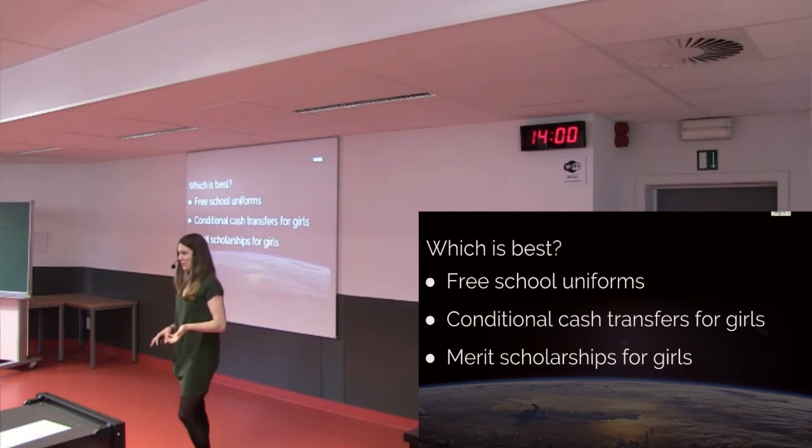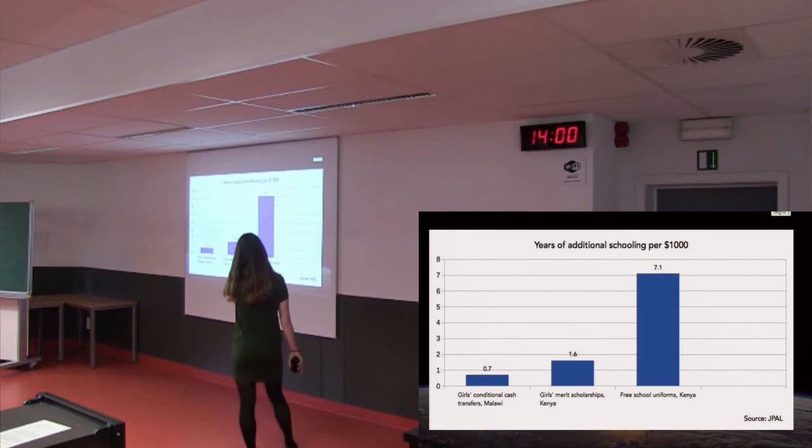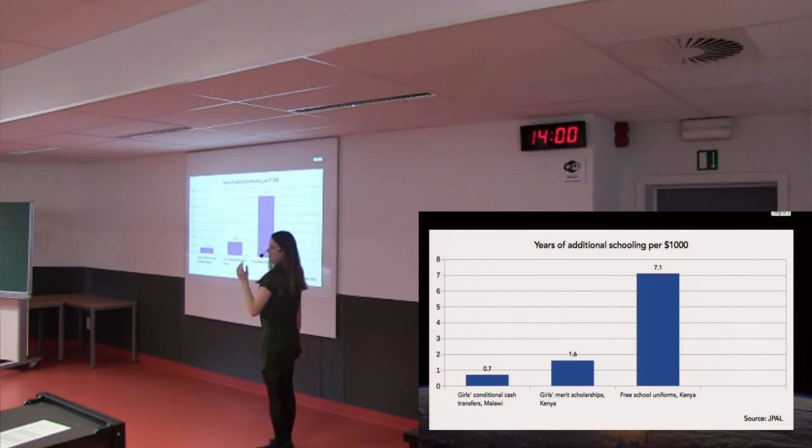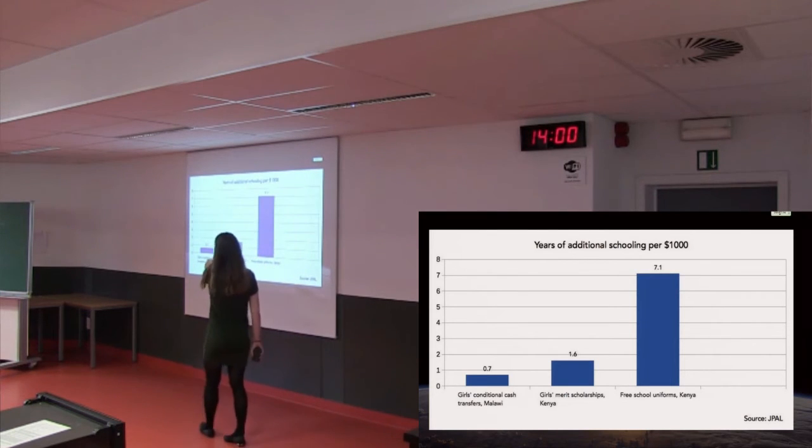Well, we have a lot of undecided people in the audience, I think. I guess this means you think we should look at the studies, right? Yes. So, turns out that free school uniforms, so if you have $1,000 and you give them to this charity, you can get 7.1 years of additional schooling, that's 10 times better than the worst performing one, conditional cash transfers.